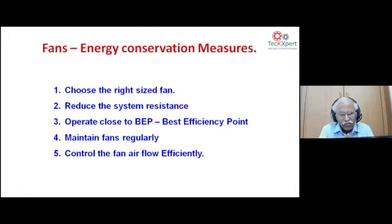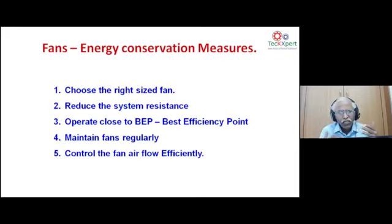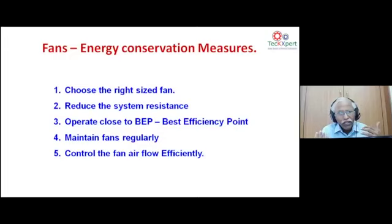Right-sizing: many industries have oversized blowers — for example, specifying a 5.5 kW blower but only operating at 2 kW. Oversizing itself is a system loss. Second is system resistance — the static pressure in pascals at the downstream of the blower must be maintained and optimized. Third, any blower purchased needs a fan performance curve from the OEM, just like a test certificate for a transformer, to identify the best efficiency point.